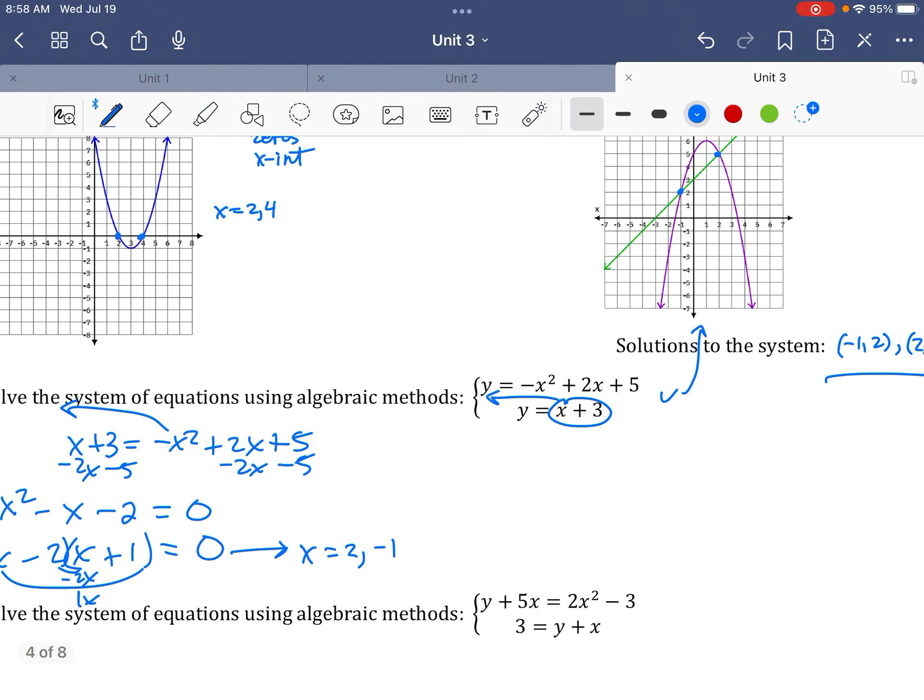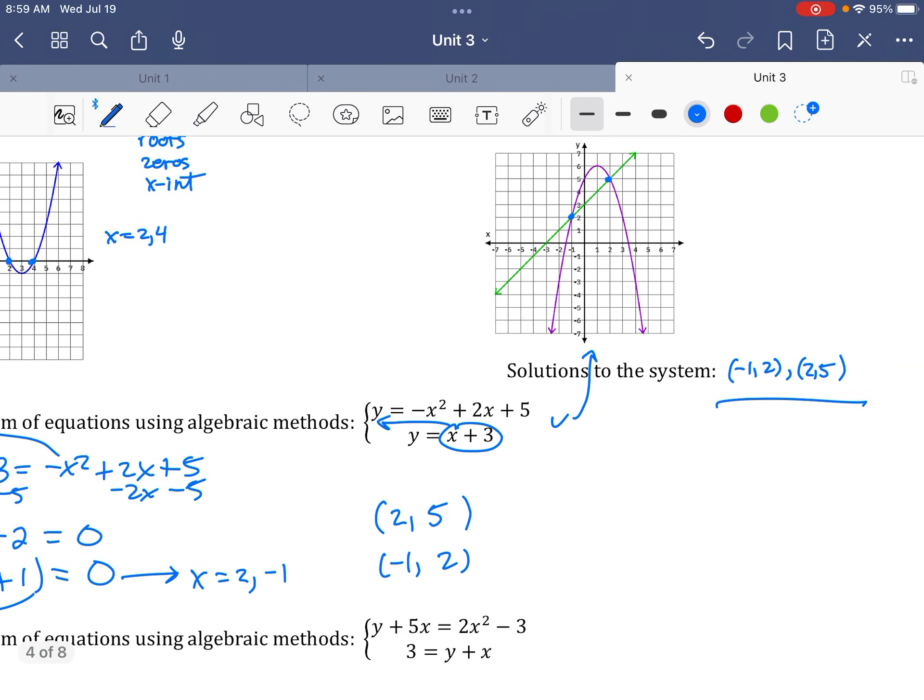All right, and so then your only job left to do is this, is take 2 and negative 1, plug them in for x, and get your y values. So you want to pick the easiest one. If I plug 2 into this top problem, look, I'll plug it there and there. That's annoying. Just plug 2 into here. Plug negative 1 into there and get the answers. Okay, so plugging 2 in, I get 5. Plugging negative 1 in, I get 2, just like we got before.